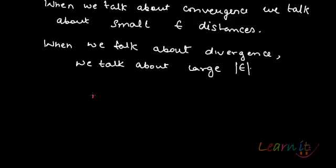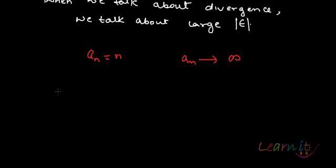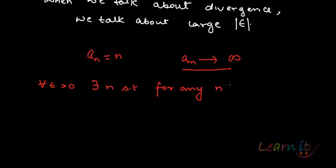For example, let's take a_n equals n — the natural numbers. Now, a_n tends to infinity. How will I actually denote it in terms of epsilon? This happens because for all epsilon greater than zero, there exists an N such that for any n greater than or equal to this capital N, n is greater than epsilon. This is what I have to prove: that n actually tends to infinity as n tends to infinity.